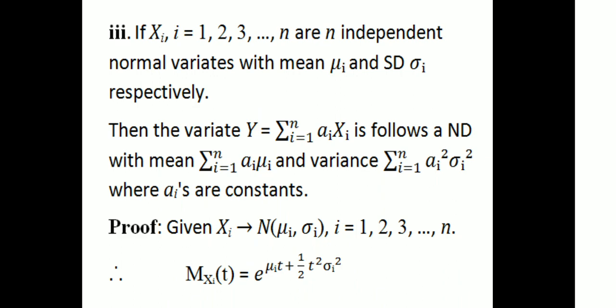Third additive property: if Xi, for i = 1, 2, 3, ..., n are n independent normal variates with mean μi and standard deviation σi respectively, then the variate Y = Σ(i=1 to n) ai·Xi follows a normal distribution with mean Σai·μi and variance Σai²·σi², where ai is a constant.